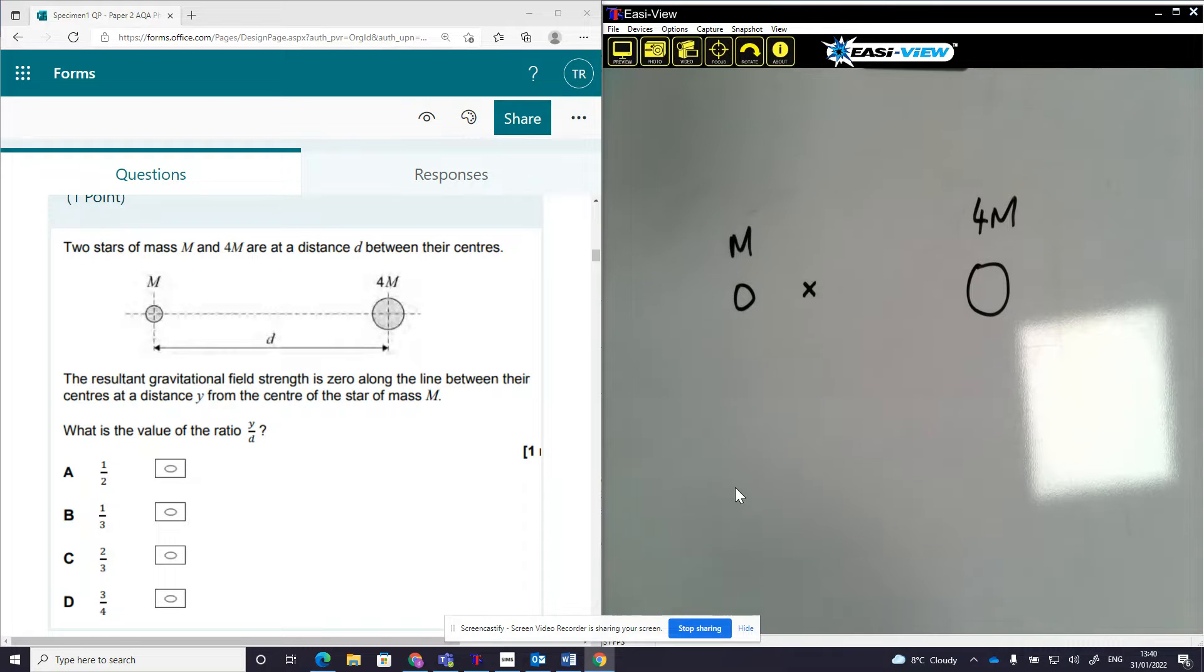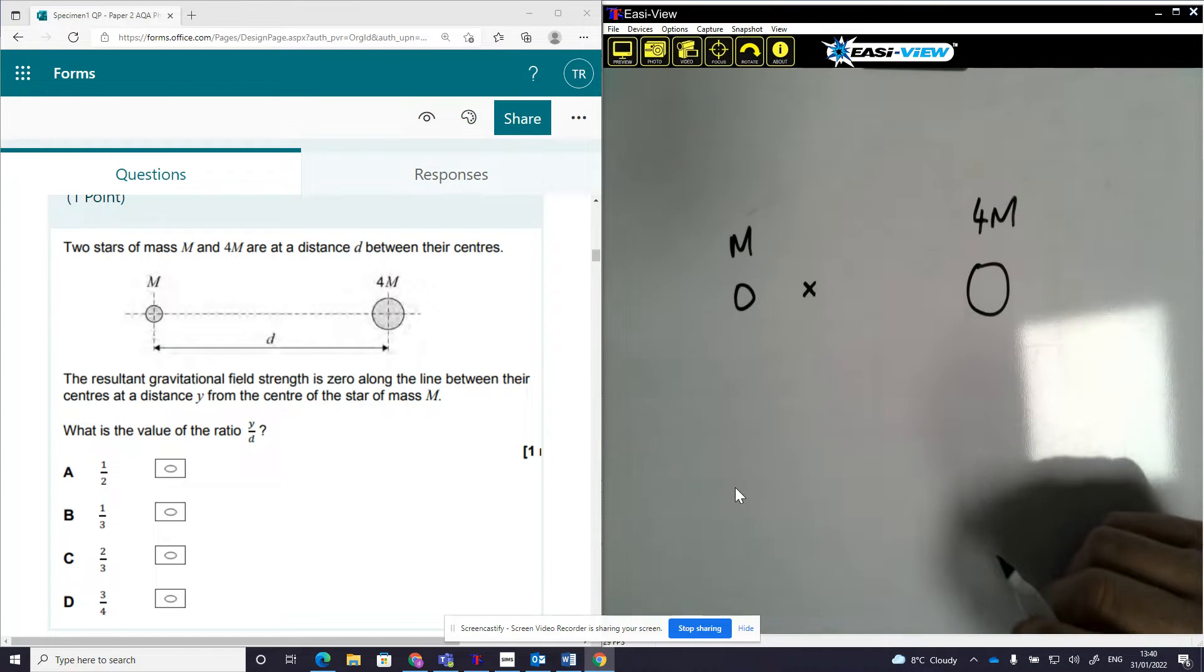So this question is about gravitational field strength and proportionality in ratios. I've said this before in videos because these questions come up a lot, and the more you practice them, the easier they will become.